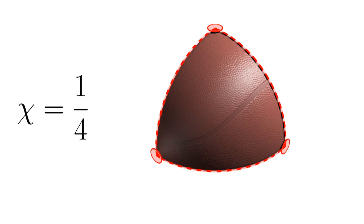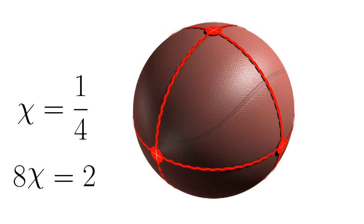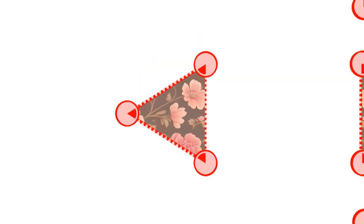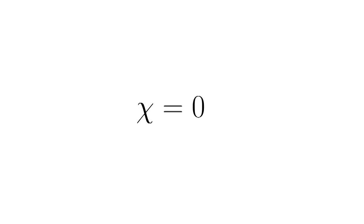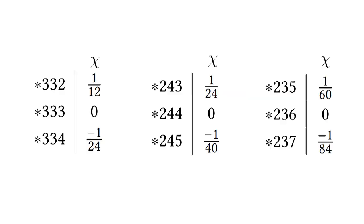To find a spherical symmetry, we find an orbifold with a positive characteristic and then copy it enough times to produce a characteristic of two. But what if we copy the orbifold an infinite number of times? If we want to create wallpaper, we need to fill in the whole plane with an infinite number of orbifolds, so the characteristic should be two divided by infinity, or zero. To find the symmetries for wallpaper, we are looking for orbifolds with a characteristic of zero. Again, we can just try all the different combinations and work through the math.